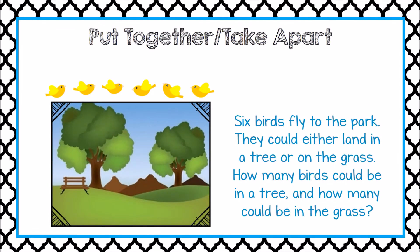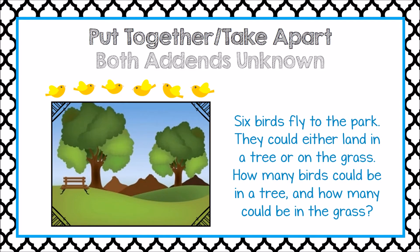Let's take a look at another problem. Six birds fly to the park. They could either land in a tree or on the grass. How many birds could be in a tree and how many could be in the grass? We know the total amount, but we don't know either part. This is a both addends unknown problem.